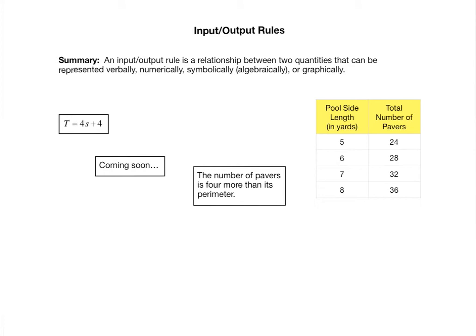Let's now summarize what we've done so far and mention a couple of things that we will do soon as well. So we are studying input-output rules to start this course. An input-output rule is a relationship between two quantities, and that relationship can be represented in four different ways. The four different ways that we are concerned with in this class are a verbal representation, a numerical representation, a symbolic representation, and a graphical representation.